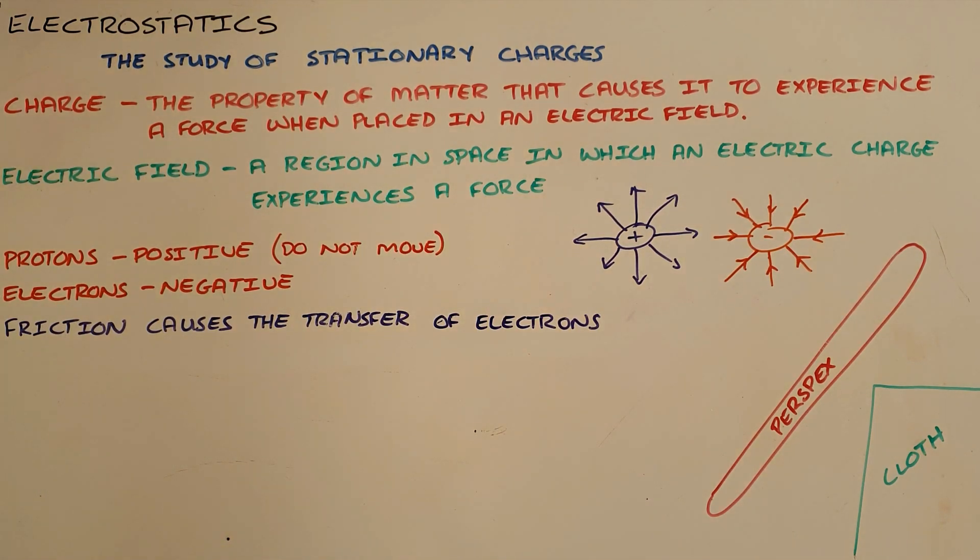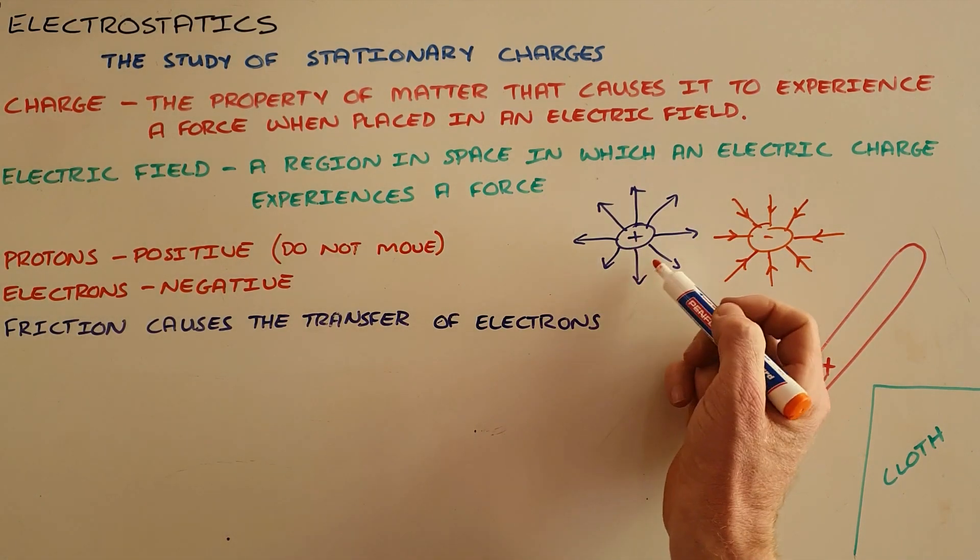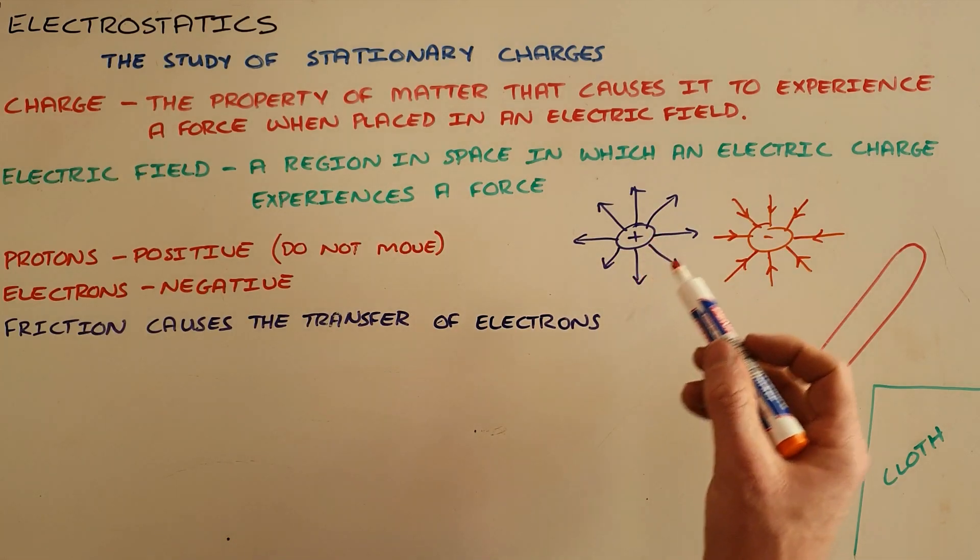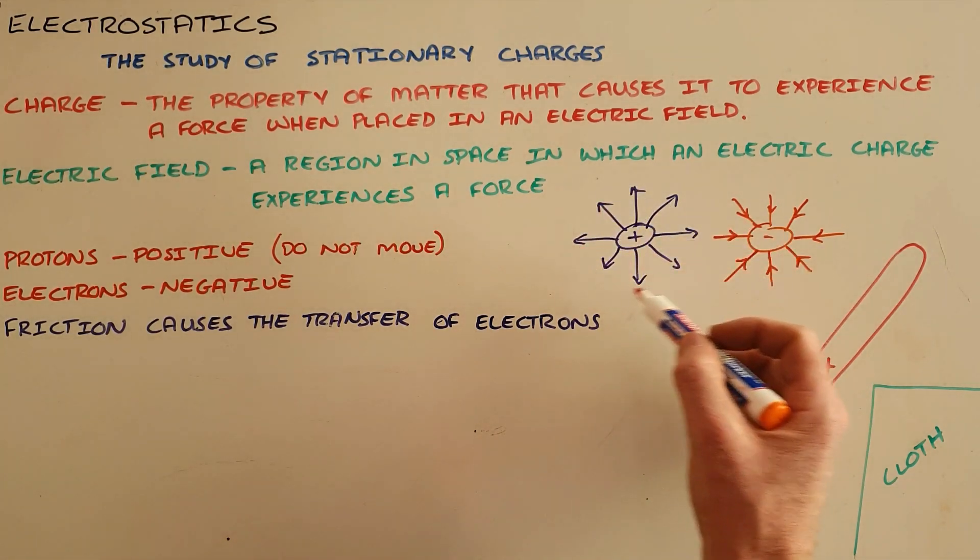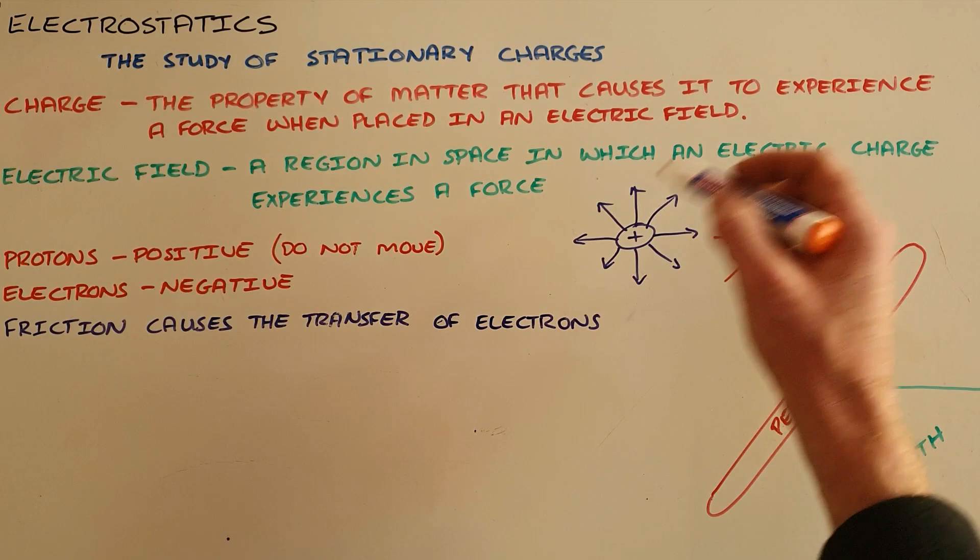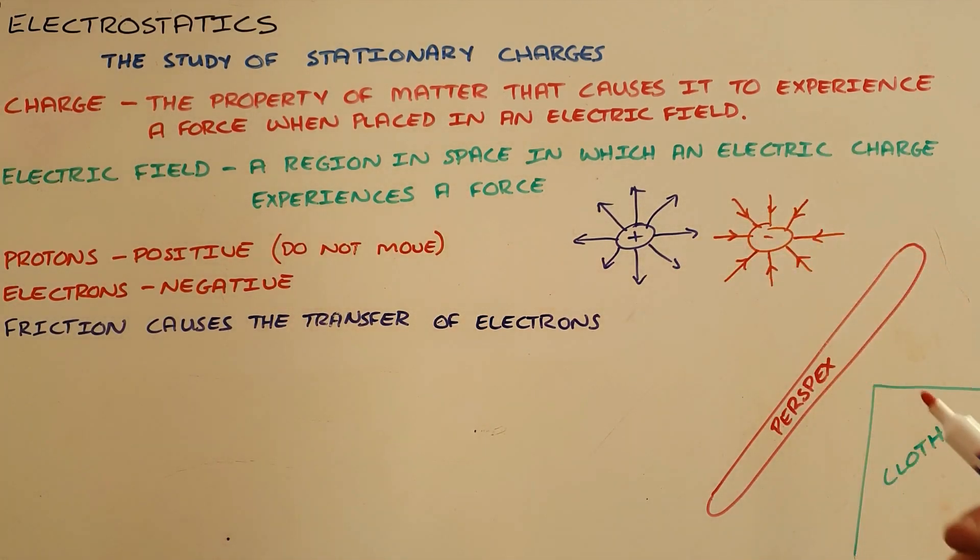An electric field is a region in space around a charged object in which another charged object would experience a force. We can show that with an electric field pattern that shows the region around this positive charge where other objects would experience a force, and the same with this pattern around the negatively charged object.